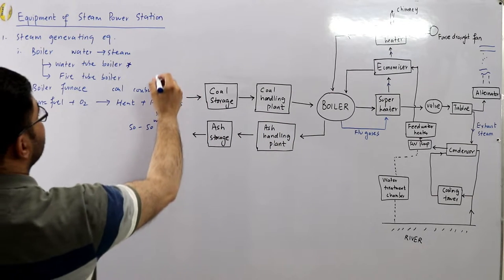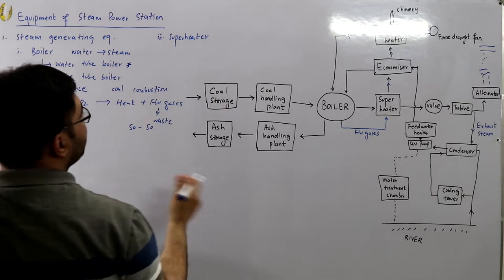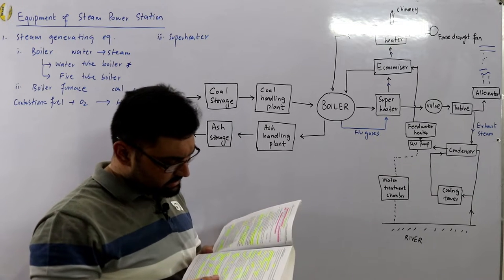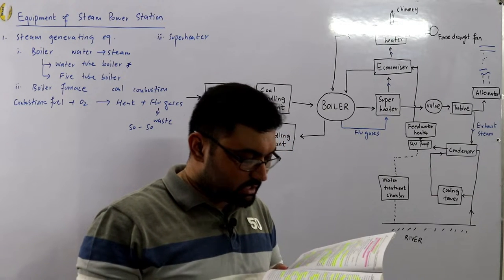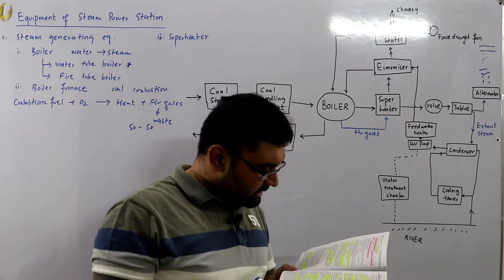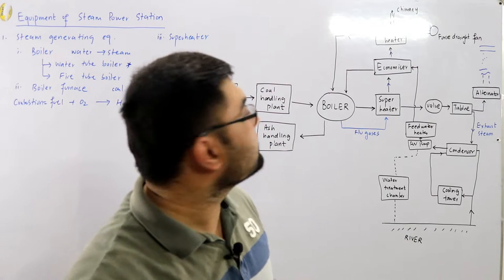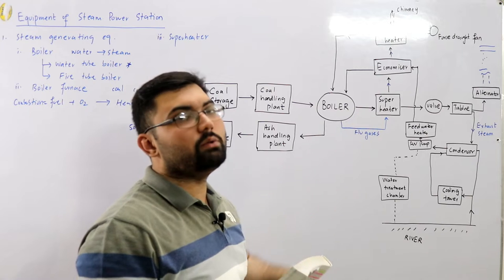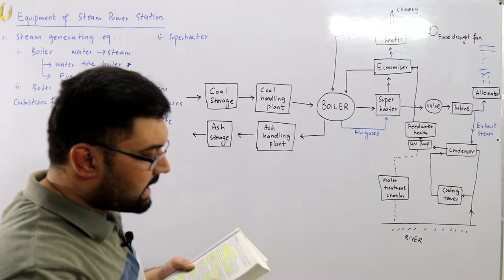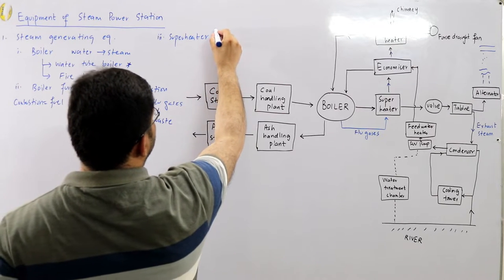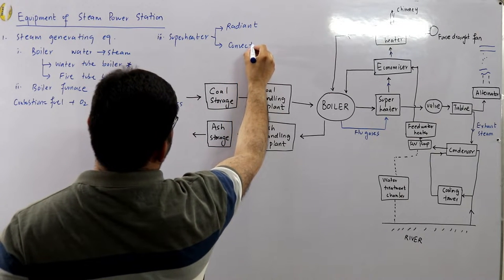Number three is the superheater. The superheater is a device that superheats the steam — it further raises the temperature of the steam, increasing the overall efficiency. It is made of alloy steels. These tubes are heated by the heat of the flue gases. Superheaters are mainly classified into two types: radiant superheater and convection superheater.